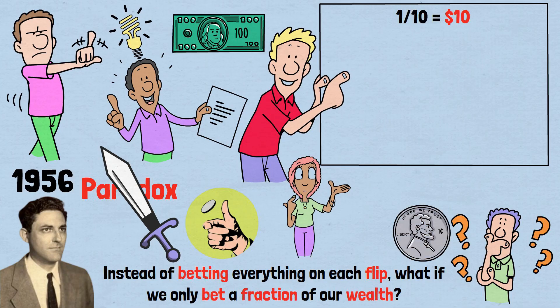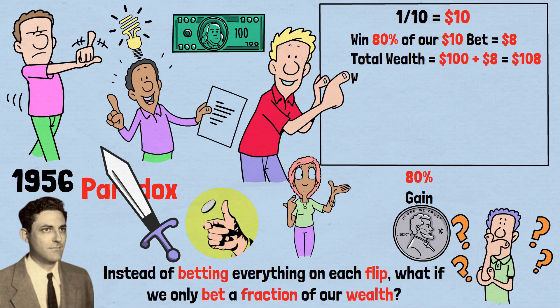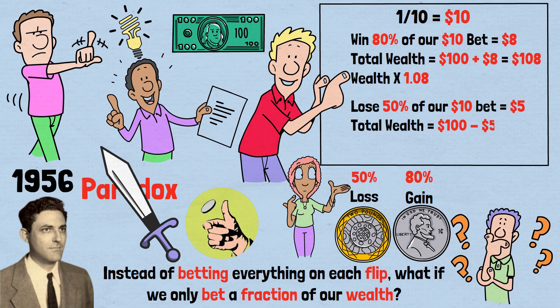Here's how this changes everything. When we flip heads, 80% gain on our bet. We win 80% of our $10 bet equals $8. Our new total wealth equals $100 plus $8 equals $108. This means our wealth is multiplied by 1.08. When we flip tails, 50% loss on our bet, we lose 50% of our $10 bet equals $5. Our new total wealth equals $100 minus $5 equals $95. This means our wealth is multiplied by 0.95.